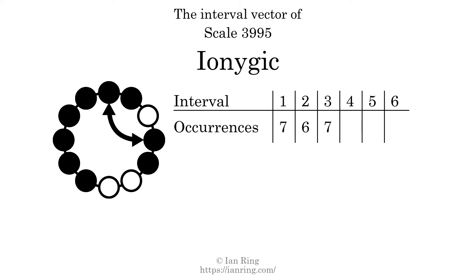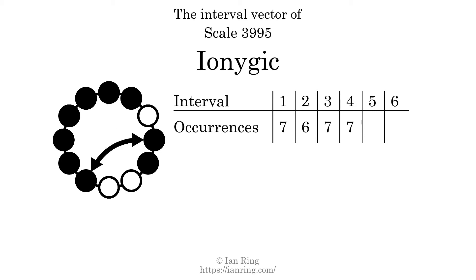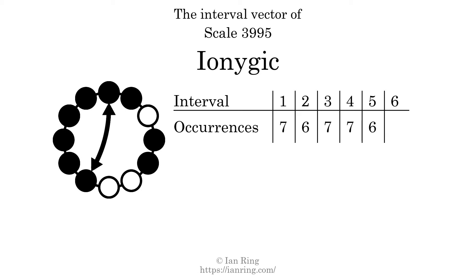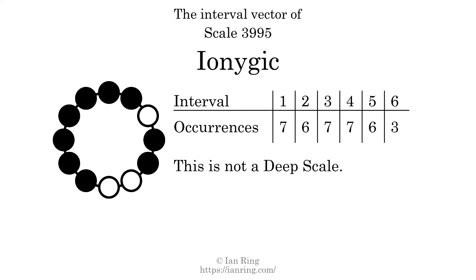There are 7 intervals with the size of 3 semitones, here, here, here, here, here, here, and here. There are 7 intervals with the size of 4 semitones, here, here, here, here, here, here, and here. There are 6 intervals with the size of 5 semitones, here, here, here, here, here, and here. There are 3 intervals with a size of 6 semitones, here, here, and here. Each interval does not appear in this scale a unique number of times, so this is not a deep scale.